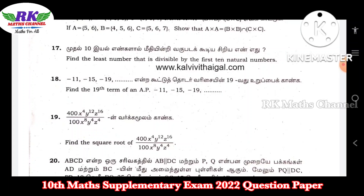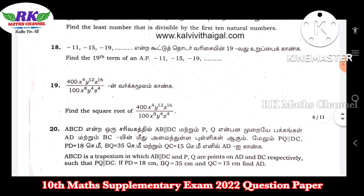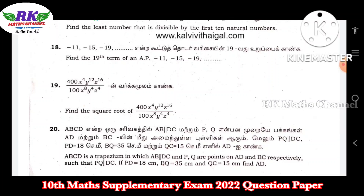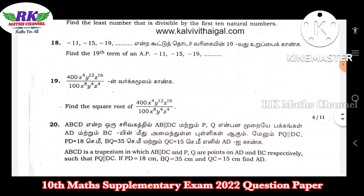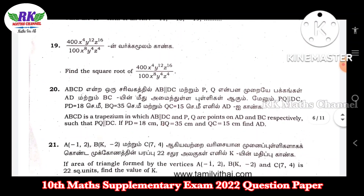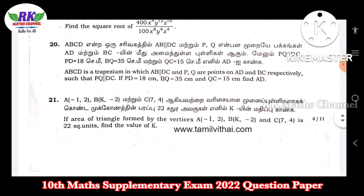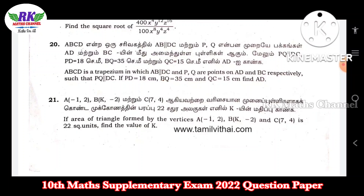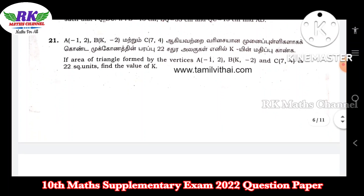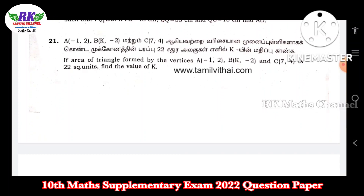Question number 18: find the 19th term of an AP — minus 11, minus 15, minus 19. 19th term, arithmetic progression problem. Next, square root — 2 marks. Question number 20: basic proportional theorem. Question number 21: area of triangle with given vertices — find the k value using coordinate geometry.